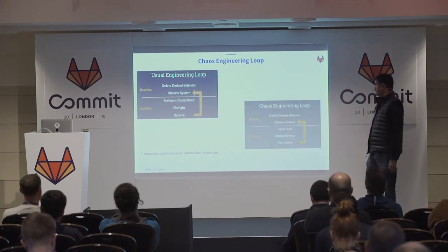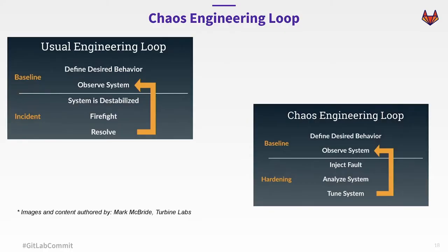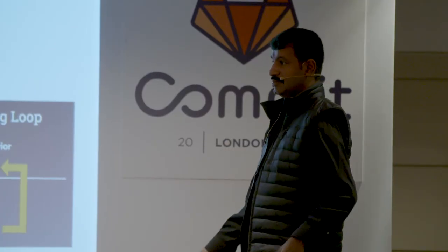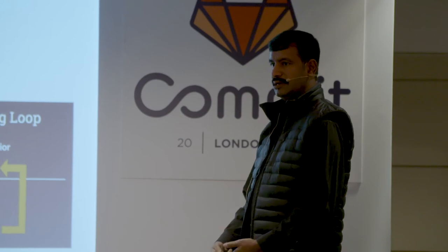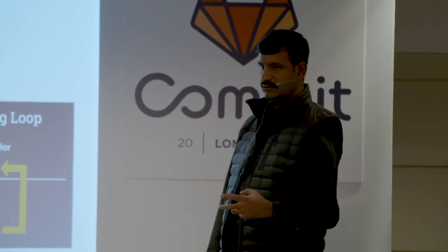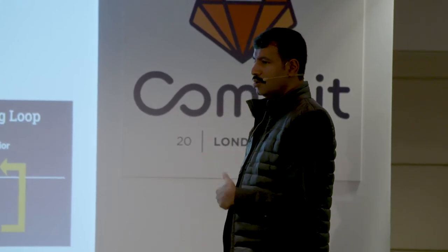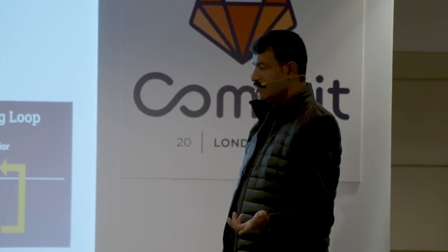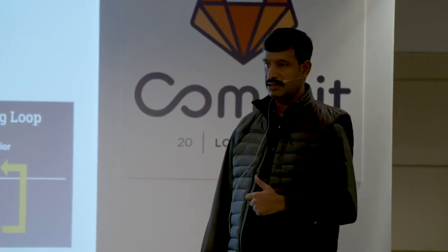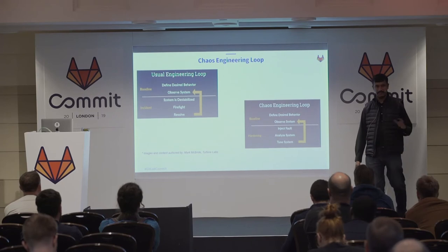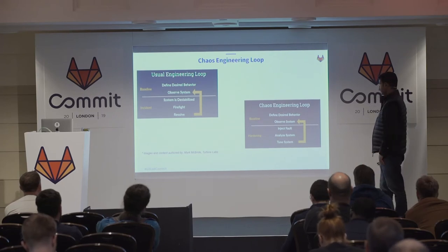In the chaos engineering loop, you don't wait for the incident to happen. You do a planned injection of failure. You don't firefight — you actually analyze the system and tune it. You start with a small injection of faults and go bigger and bigger as you tune them. This is more organized chaos. This is what large enterprises — or even small ones with critical applications in production — are expected to follow.